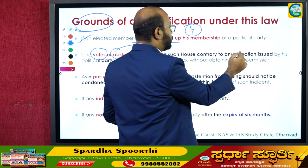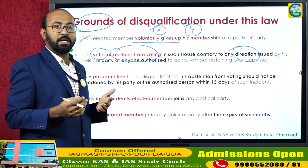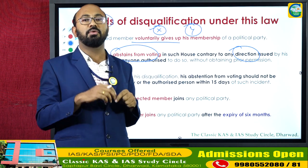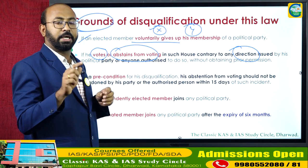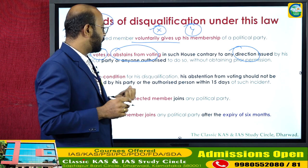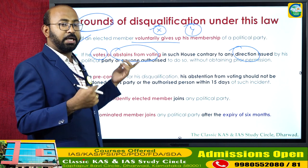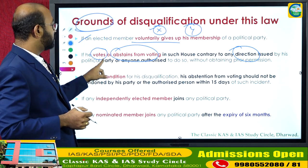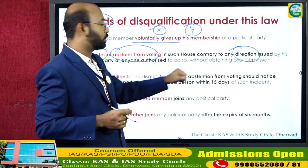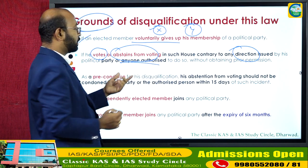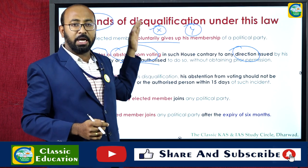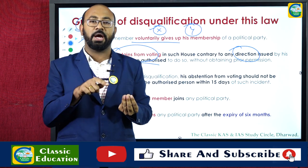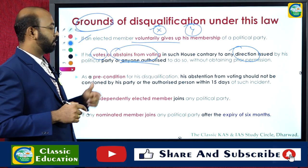The second ground: if an elected member votes or abstains from voting in the house contrary to any direction issued by his political party — or anyone authorized, i.e., the party whip. The whip is the authorized person who looks after the inner-house voting process and directs party members how to act. If the elected member acts against the whip's direction without obtaining prior permission, he will be disqualified.